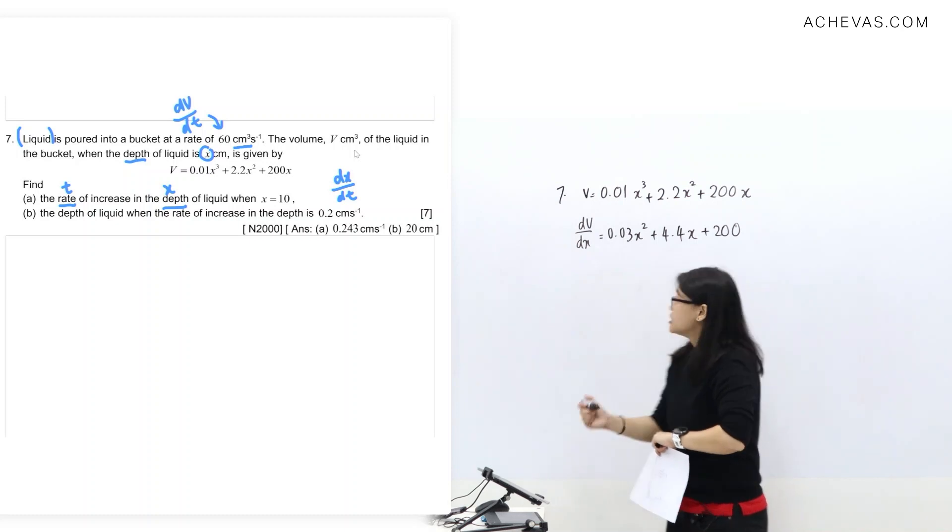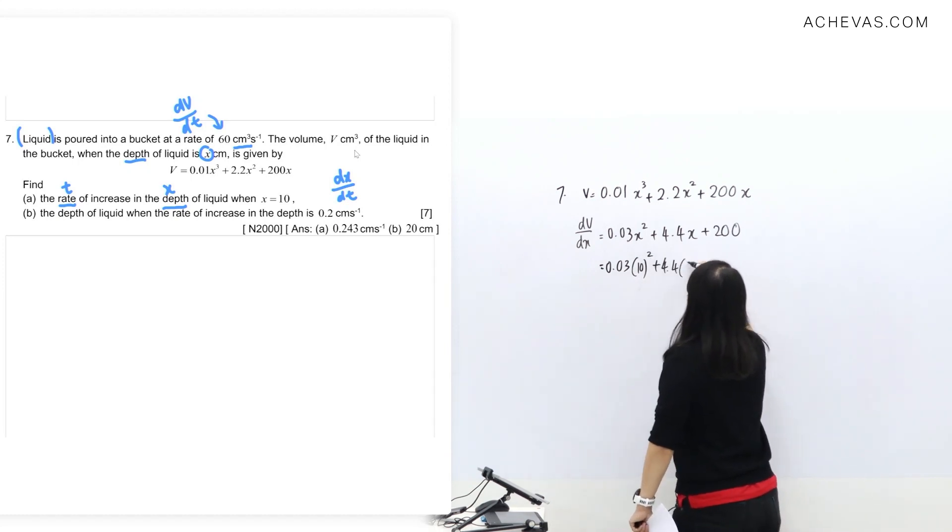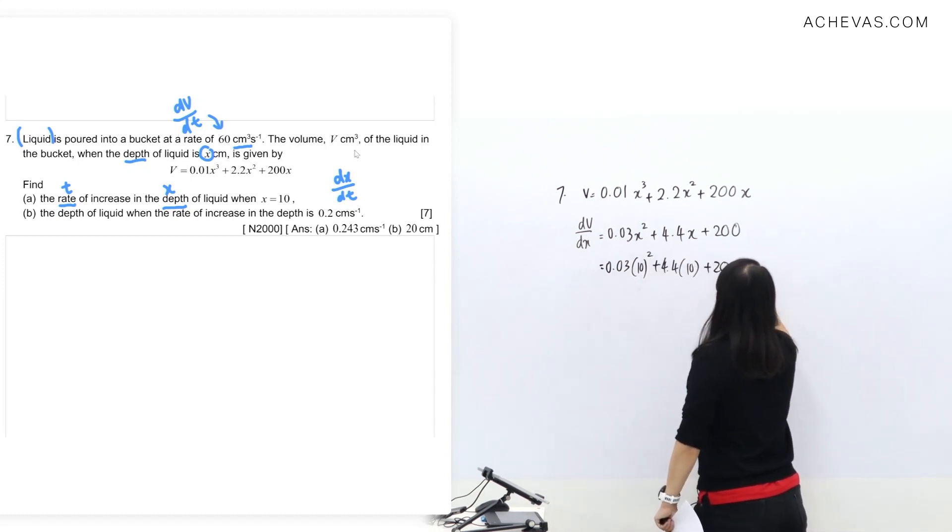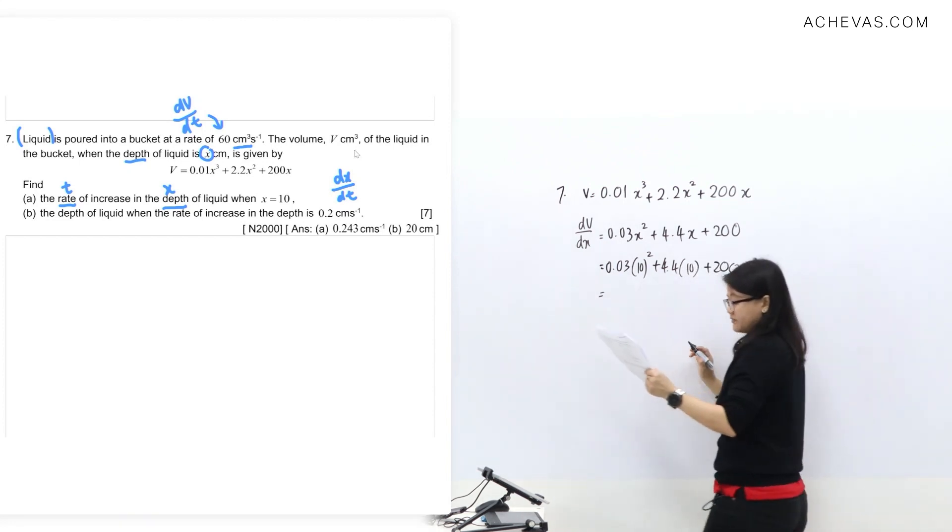And the last one, this is just 200. We're given in question part A that x is 10, so we can just replace the value of x as 10 and let's see what I get. From my calculator, I have 247.